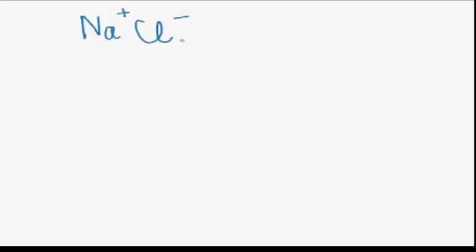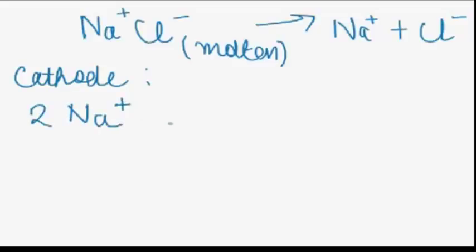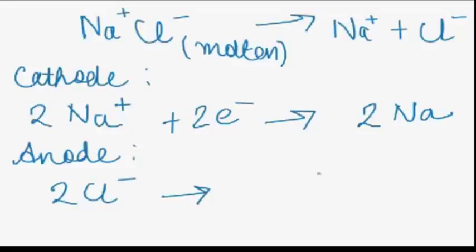In the Downs process, molten NaCl dissociates into Na⁺ and Cl⁻. At the cathode, Na⁺ reacts with two electrons to form sodium metal (2Na). At the anode, 2Cl⁻ loses its two electrons to form chlorine gas. This is the Downs process, in which sodium chloride is electrolyzed to produce sodium metal.